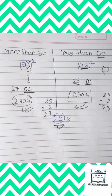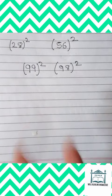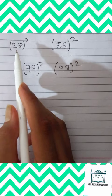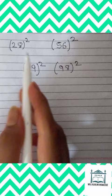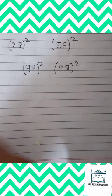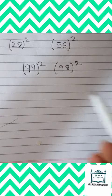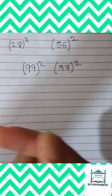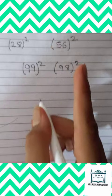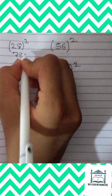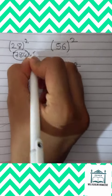So let's have some practice. So this is some examples. So over here, like 28. So 28 is less than 50. So we will apply the less than 50 method. So the answer would be 784. This would be the answer.